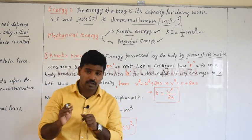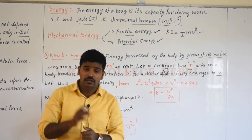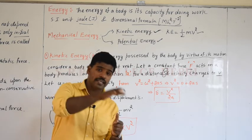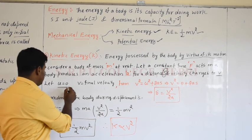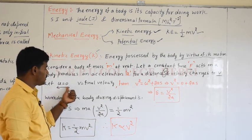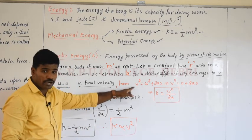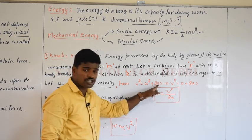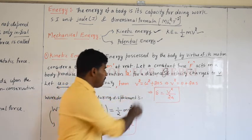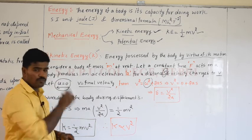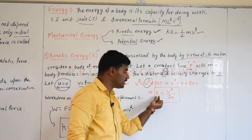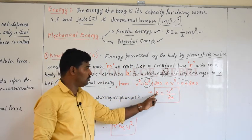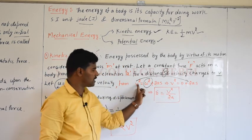Initially the object is at rest with mass m. We apply force F, which produces acceleration over distance S, and the velocity changes from 0 to final velocity V. Using the kinematic equation v² = u² + 2As, with u = 0, we get v² = 2As. Therefore S = v²/(2A).